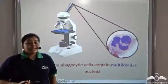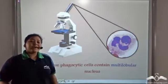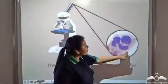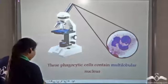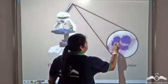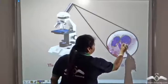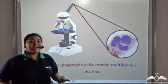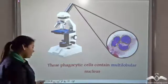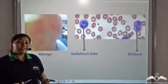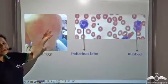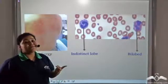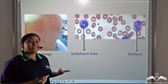The phagocytic cells that provide protection to our body have a multilobular nucleus — they have multiple lobes in their nucleus. This is one kind of white blood cell. During allergic reactions, white blood cells provide protection, and there are two different kinds of white blood cells that provide protection during allergies.